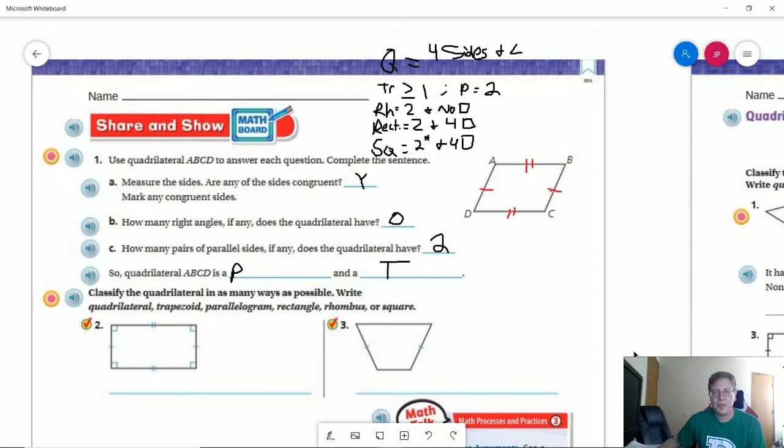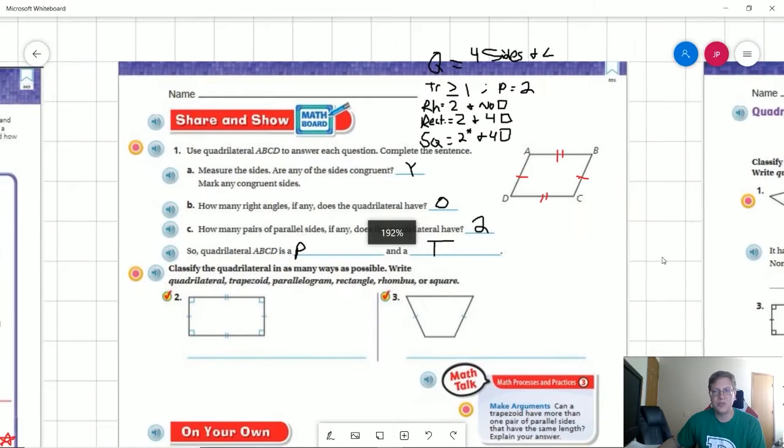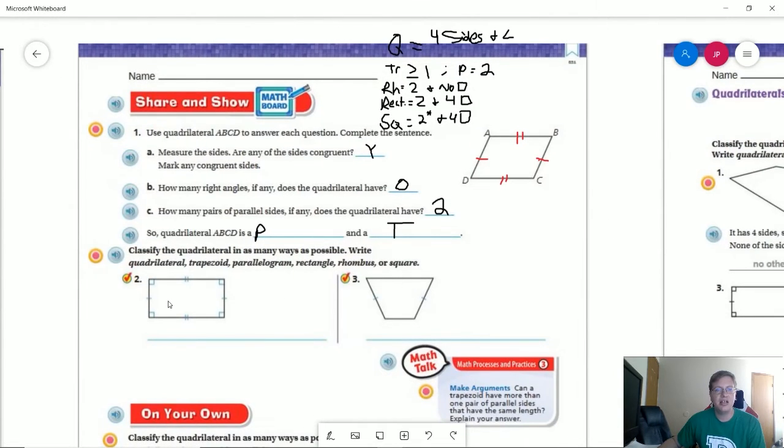I'm going to try to as quickly as possible go through the rest of these. Number two, with all of these, if it asks for quadrilaterals as an option, every single thing in this lesson, we're not trying to trick you, are all going to be quadrilaterals. So you can go ahead and assume that that's going to be there.